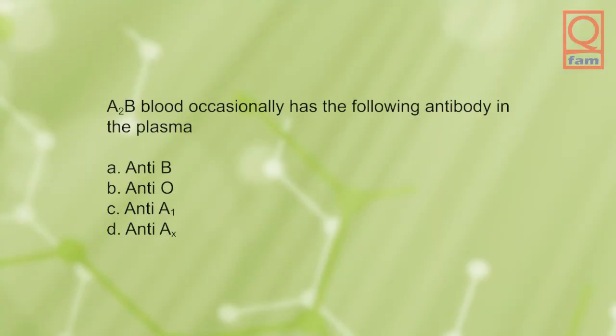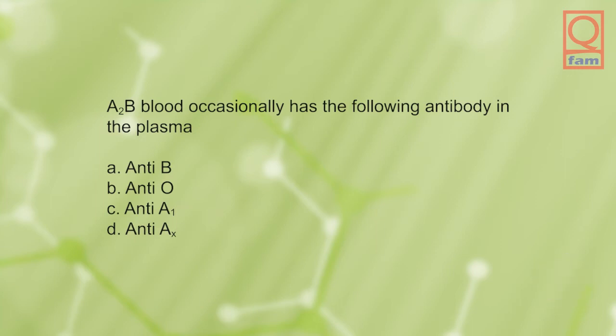A2B blood occasionally has the following antibody in the plasma: A) anti-B, B) anti-O, C) anti-A1, D) anti-AX. The answer is C, anti-A1.